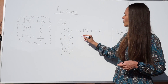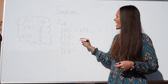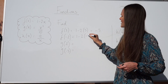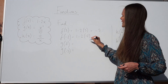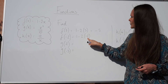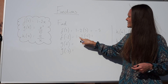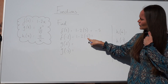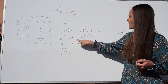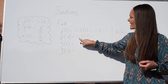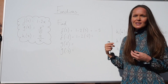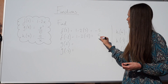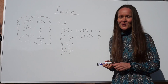Just like before, you write out the function, except when you get to the letter x, you write brackets and then fill in with the new number, negative 2. So 1 take away 2 multiplied by negative 2 is the same as 1 plus 4, because negative 2 times negative 2 turns into a positive. So 1 plus 4 is 5. That's the second one.